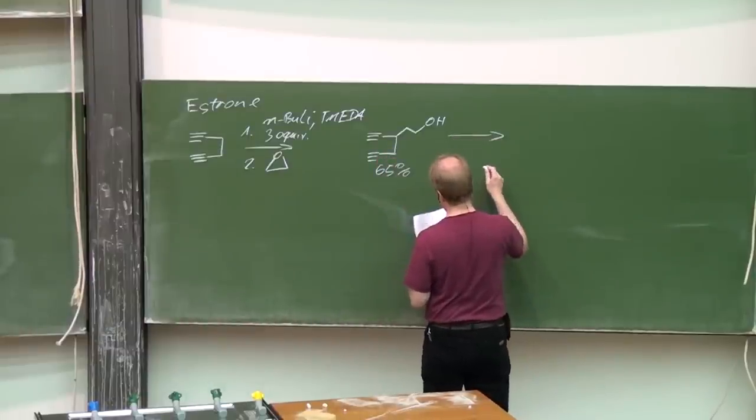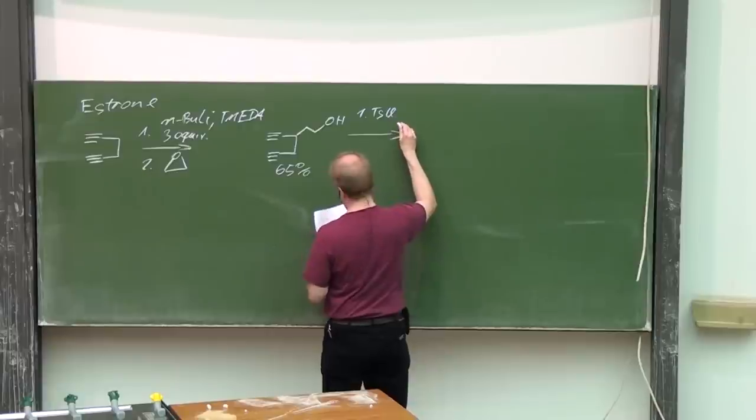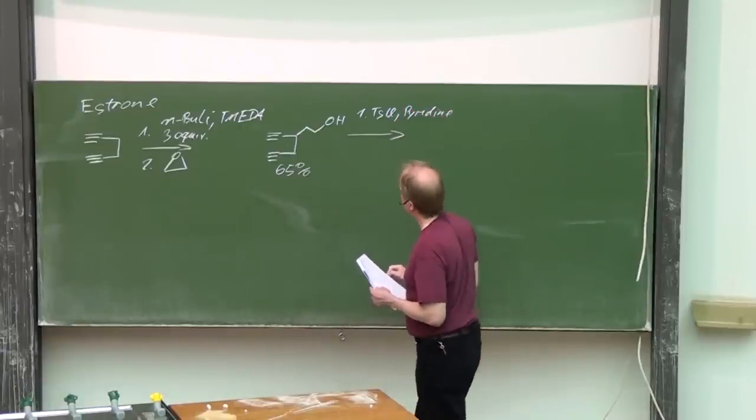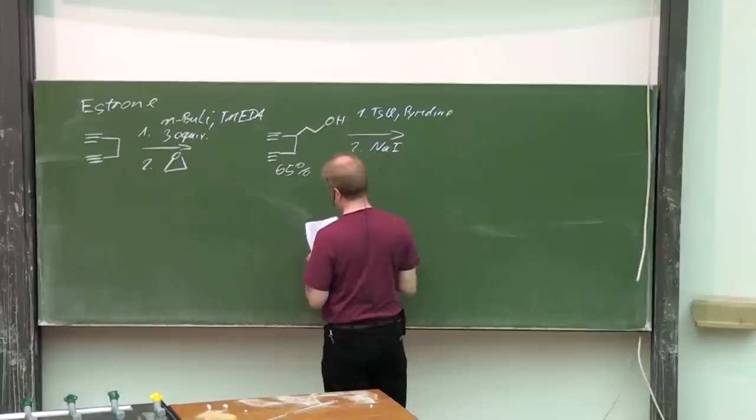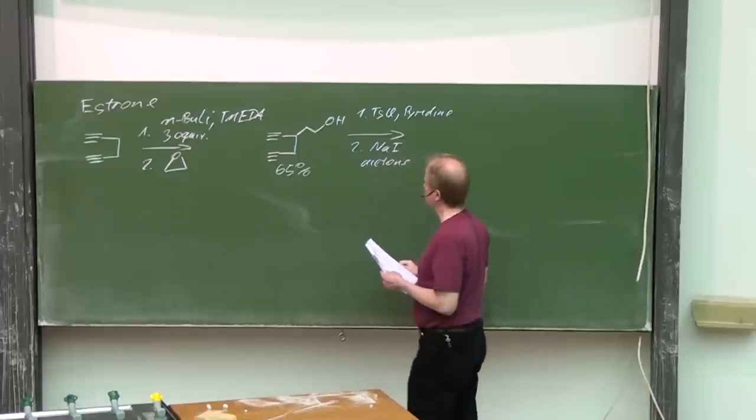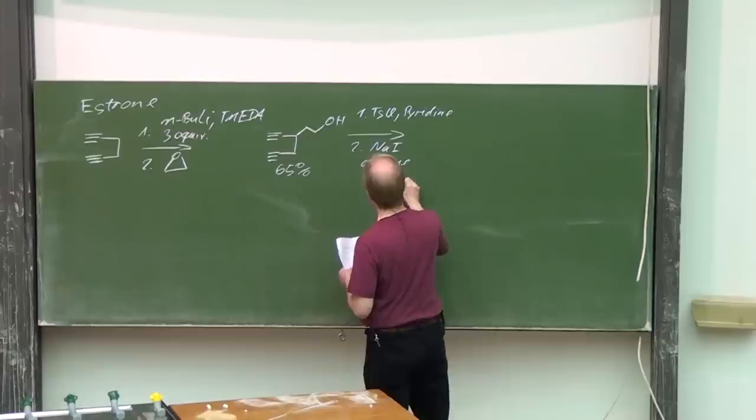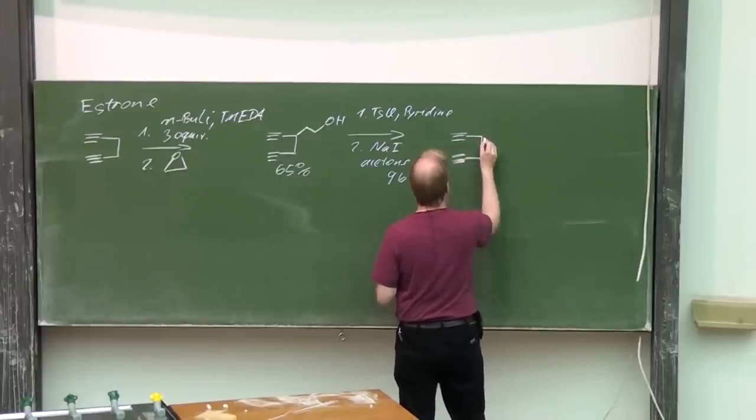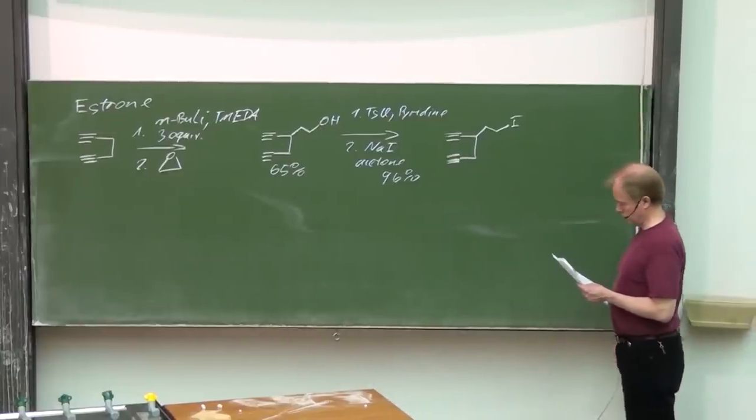Next step in the synthesis. Tosyl chloride, pyridine, for the tosylation of the alcohol. Secondly, sodium iodide and acetone. The process we would call a Finkelstein reaction. 96% yield of this iodo compound. We call that A.